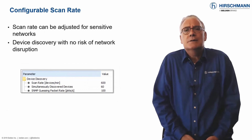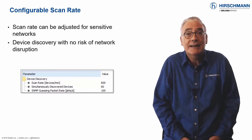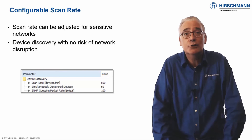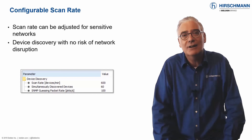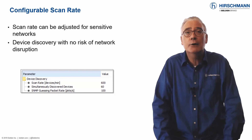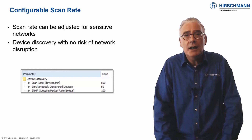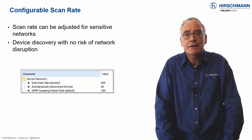A major difference between IT and OT networks is the connected equipment. An IT network typically supports equipment such as servers, PCs, and printers, which is highly resilient to excessive network traffic. The same cannot be said for typical OT equipment such as PLCs, drives, or IO. The protocol stacks supported by these devices can easily be overloaded by the level of broadcast traffic generated during an IP address range scan, resulting in device failure.